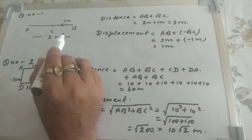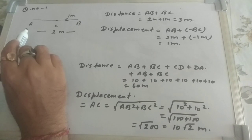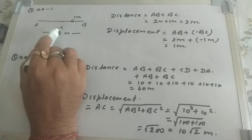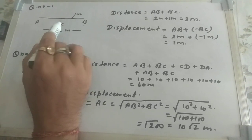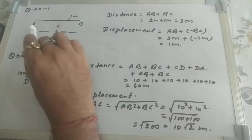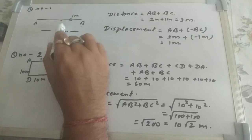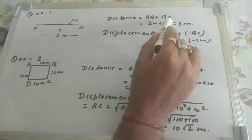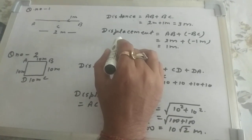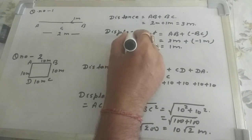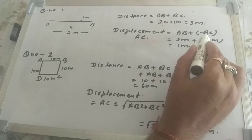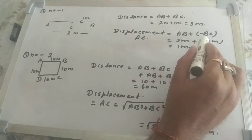Now let us look at problems related to distance and displacement. Problem 1: a body moves from A to B and then comes back to C. Distance equals the total path length, which is AB plus BC — that is 2 meters plus 1 meter, giving 3 meters. Displacement is the shortest path, which is AC. Since the body returns on the same path, AC equals AB minus BC, that is 2 minus 1, giving 1 meter.